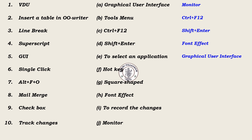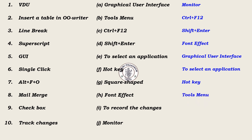6. Single click – To select an application. 7. Alt plus F plus O – Hard key. 8. Mail merge – Tools menu. 9. Checkbox – Square shaped. 10. Track changes – To record the changes.